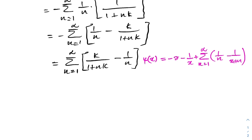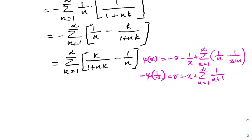As the next step, I am going to multiply both sides by minus one and substitute 1/x for x. So minus digamma of (1/x) equals gamma plus x plus the infinite sum from n equals 1 to infinity of (1/(n plus 1/x) minus 1/n).